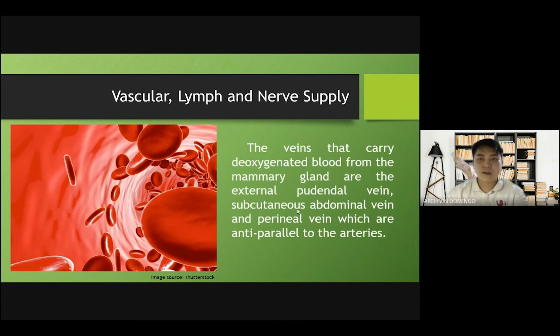The veins that carry the deoxygenated blood from the mammary gland are the external pudendal vein, subcutaneous abdominal vein, and the perineal vein, which are anti-parallel to the arteries.